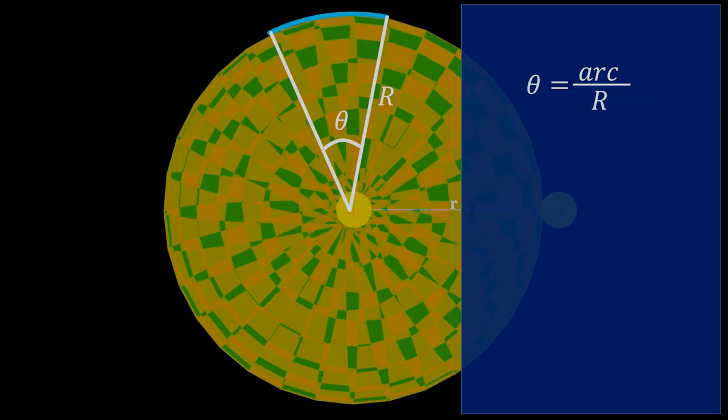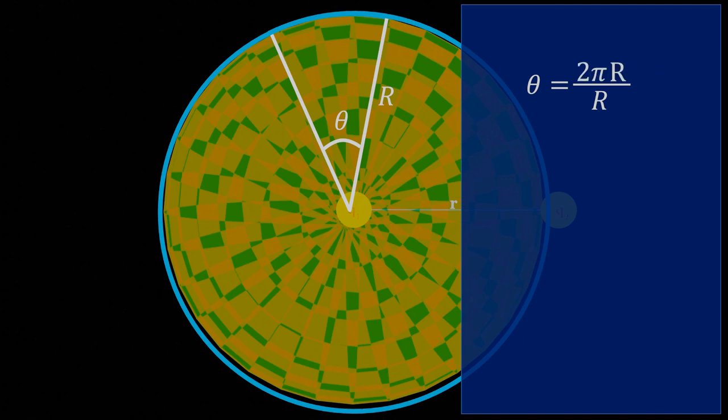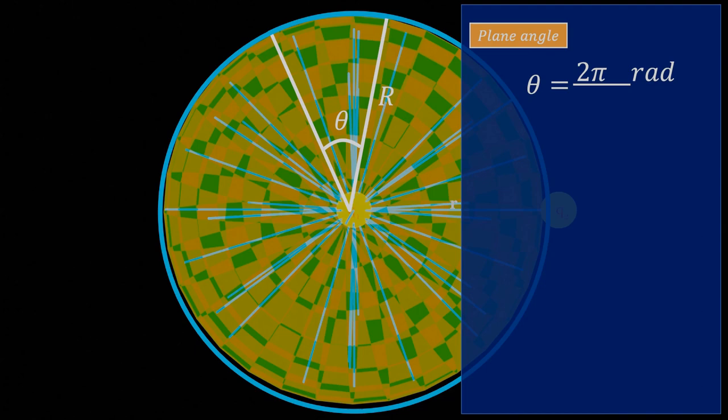If we consider the arc with a complete circumference of the circle, which is 2π r, then we will get an angle of 2π radians, which is a plane angle. We can say that the charge is creating electric field lines around itself in 2π radians.